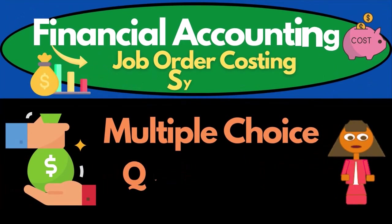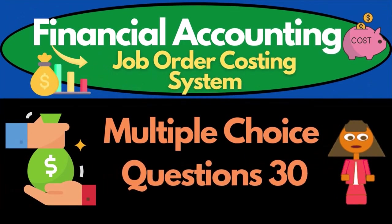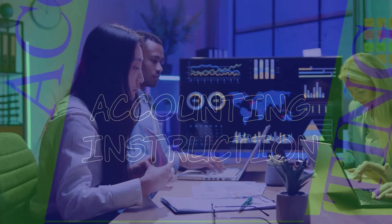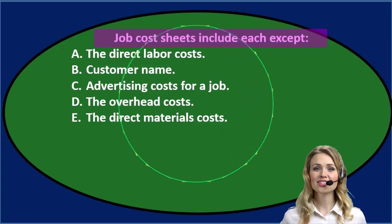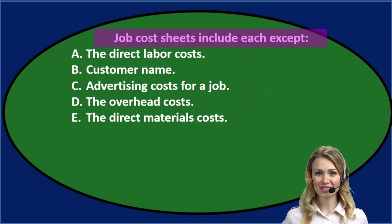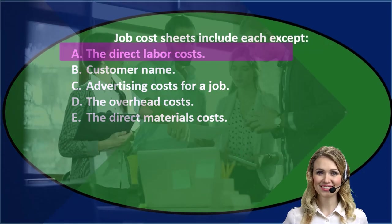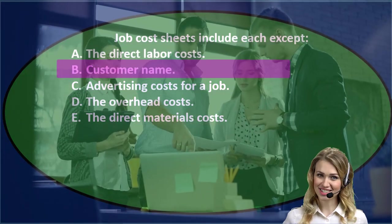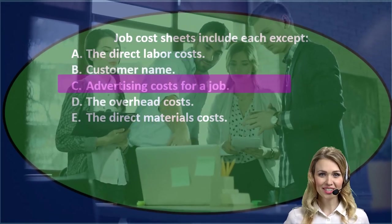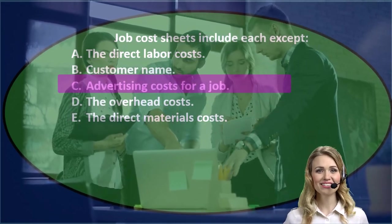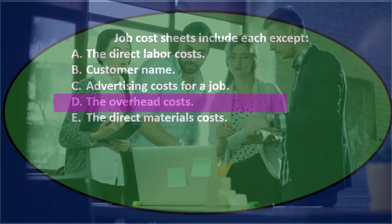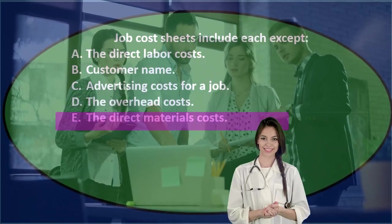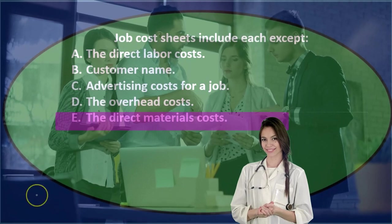In this presentation we will take a look at multiple choice questions related to job cost systems. First question: job cost sheets include each except — A: the direct labor costs, B: customer name, C: advertising costs for a job, D: the overhead costs, E: the direct materials costs.